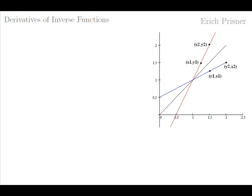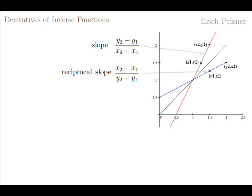What is the slope of the reflected tangent? How are the slope of a straight line and of its reflection related? Take two points x1, y1 and x2, y2 on the original straight line. Its slope is y2 minus y1 over x2 minus x1. The reflected straight line goes through the reflected points y1, x1 and y2, x2 — with entries interchanged — and has therefore a slope of x2 minus x1 over y2 minus y1, which is just the reciprocal of the slope of the original line.